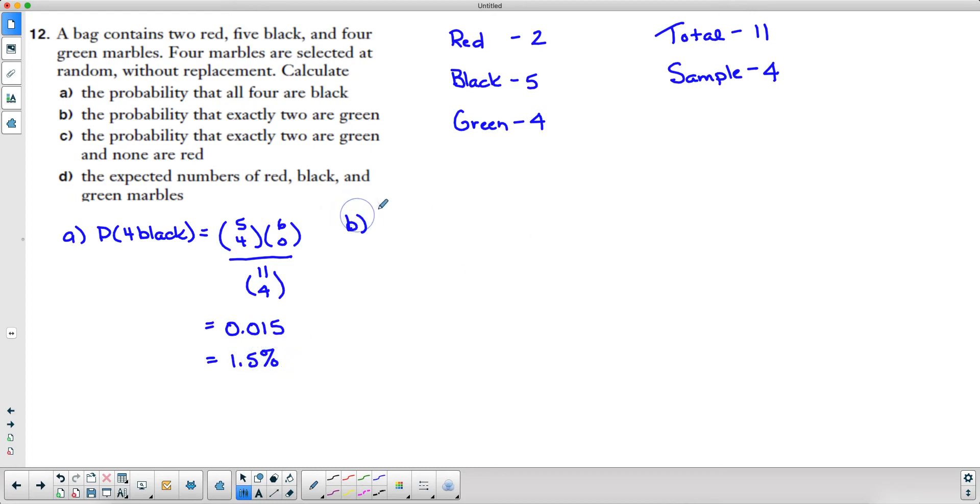Part b wants us to calculate the probability that exactly two are green. We have four green marbles and we're going to take two of them. The rest of them, there's seven other ones where we're taking the other two from those seven. The way anything can happen is that we've got 11 things and we're choosing four of them. If I plug all of that into my calculator you get 0.3818, which is approximately 38.2 percent.